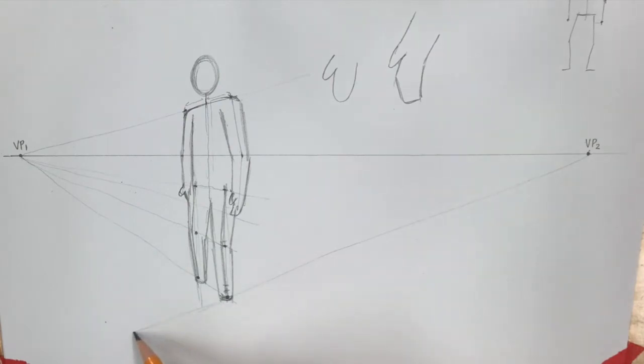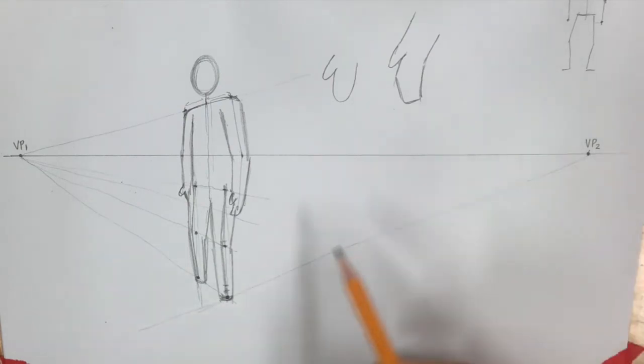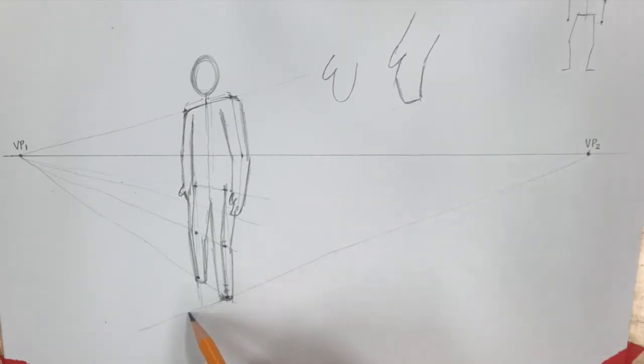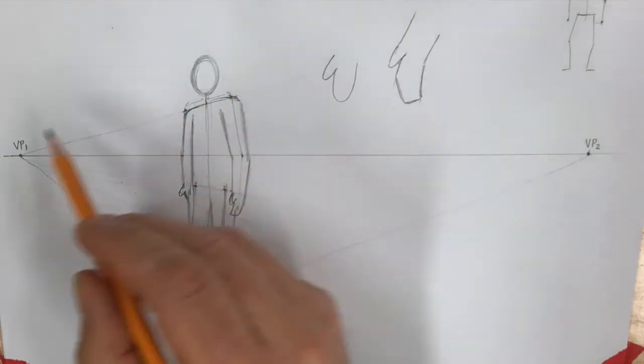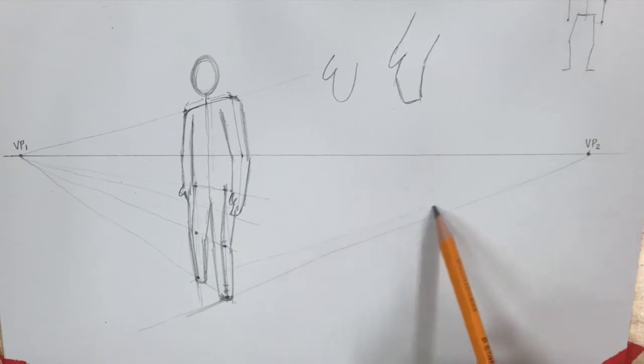Now we've got to think about the feet here as well. So the feet are going to be... I'm going to draw a line to the vanishing point on the other side, vanishing point two, from the ankle. And the feet are going to go off in this direction if he's facing here.